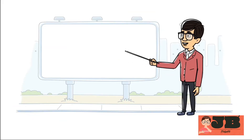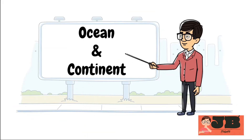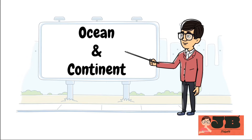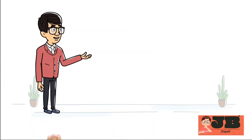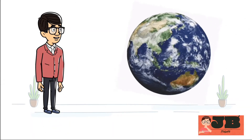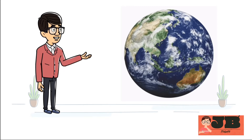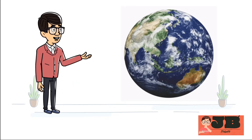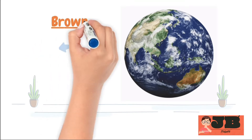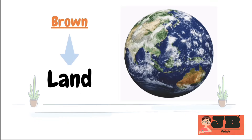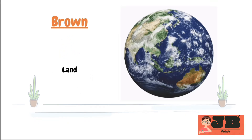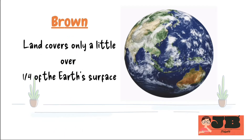Let's understand about oceans and continents. Early astronauts were so fascinated by this view that they lovingly called Earth the Blue Planet. But water is not the only thing that makes Earth special. When you look closely, you will also see the color brown, which represents land. Although land covers only a little over one-fourth of the Earth's surface, it plays a big role in our lives.